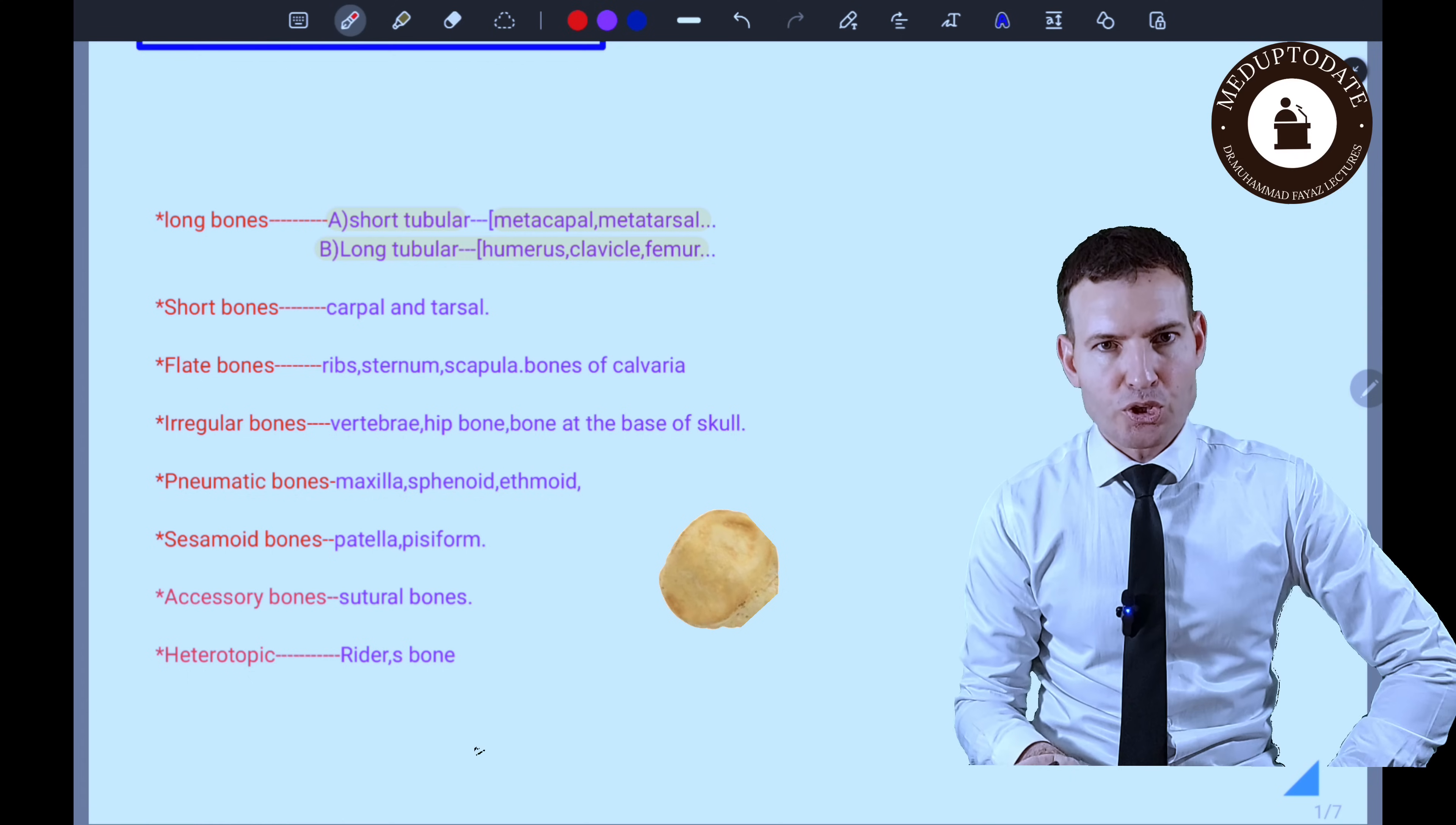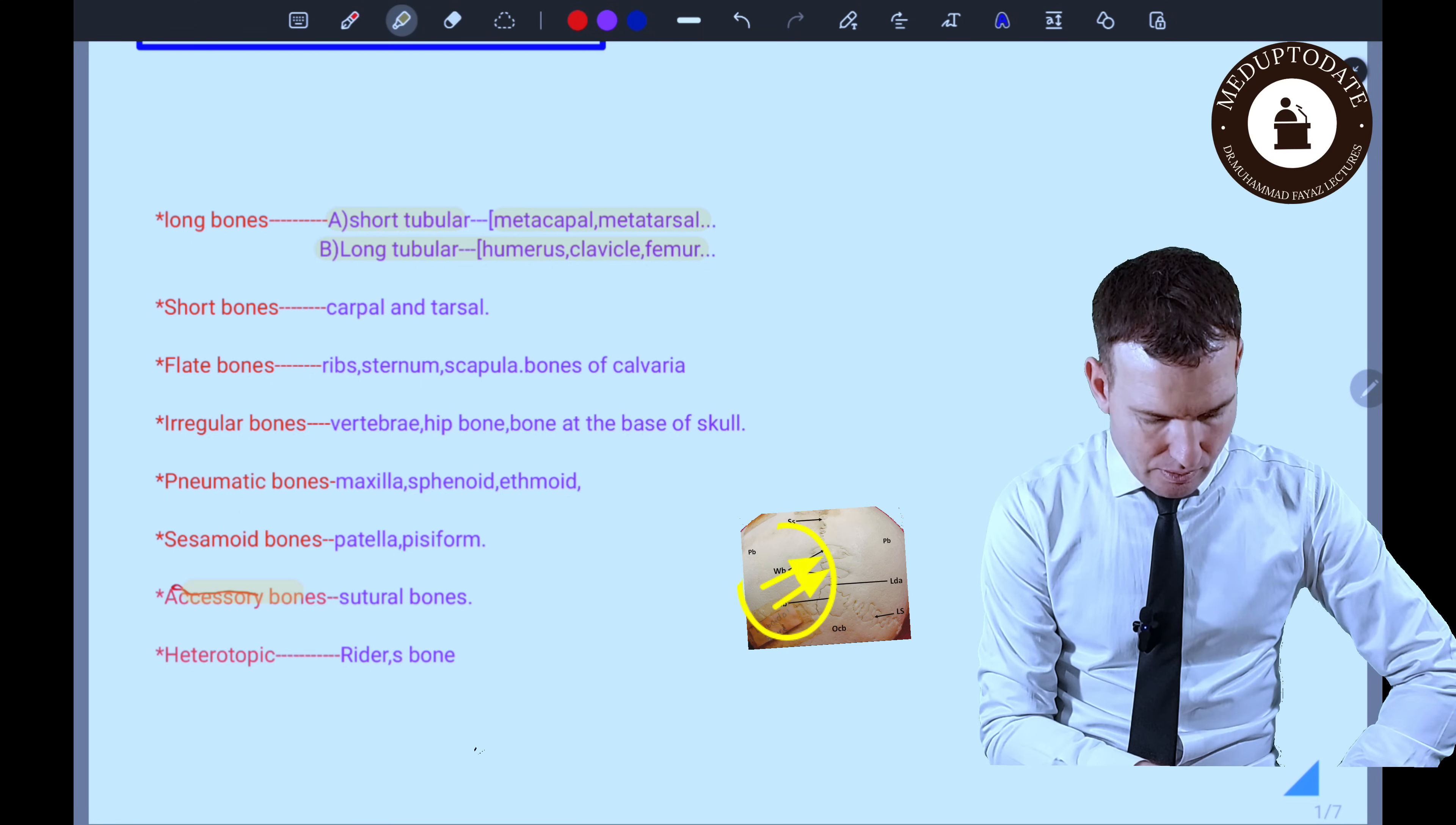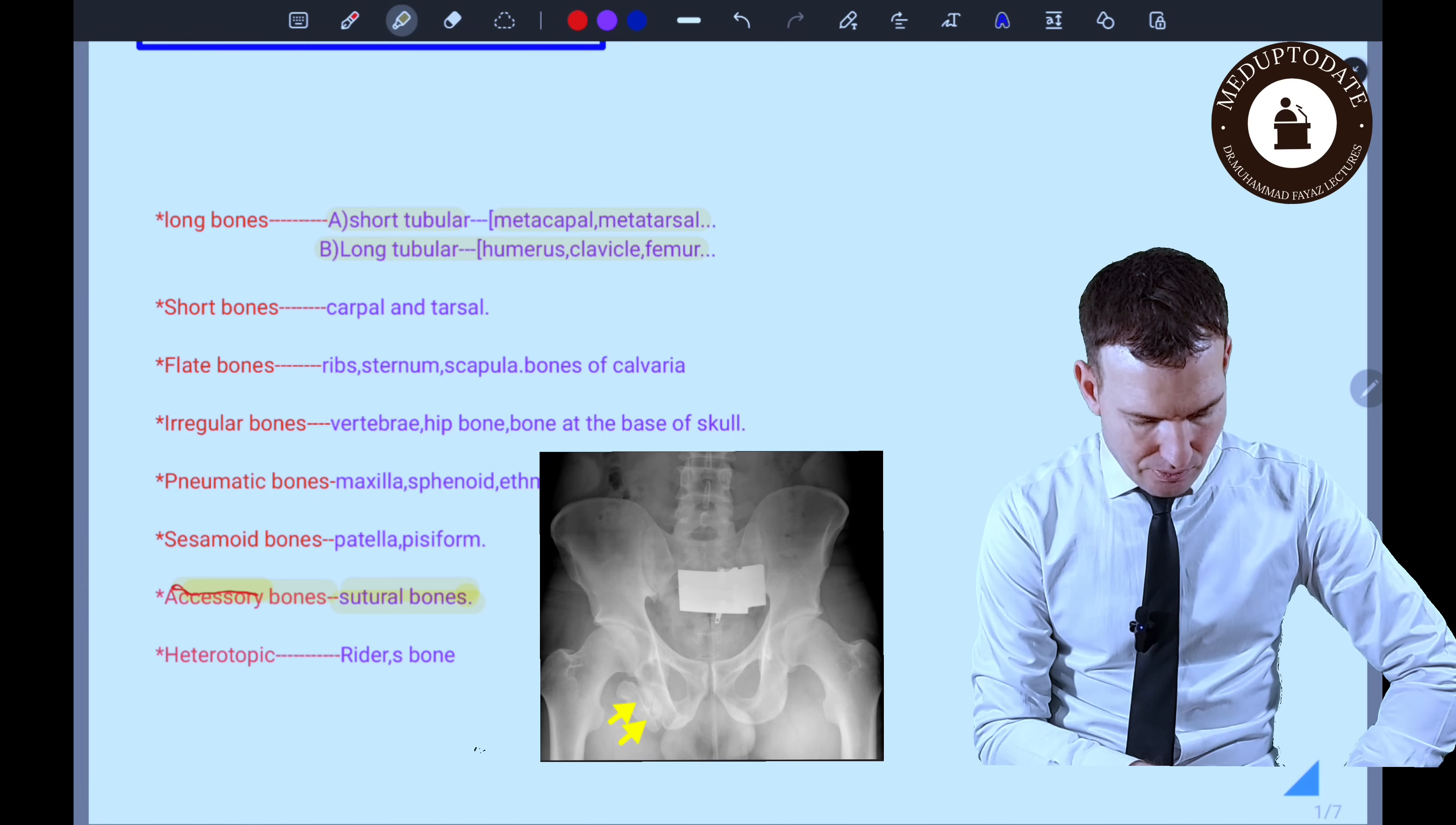Another example of such bone is the pisiform bone. Then we have accessory bones. Accessory bones are present in the skull structure. They are mostly present in the sutures of the skull.